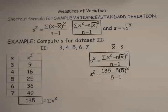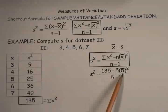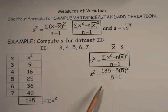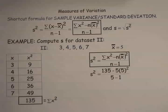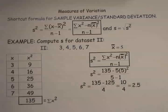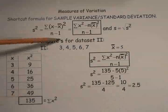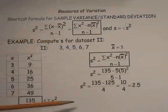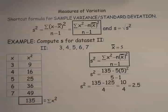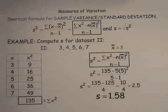Plugging that in and noting that N is five and X-bar is five — that's just a coincidence — we end up with 10 fourths, which is 2.5. Remember, we're looking for S, not S², so the last step is to take the square root of S² to get S. The square root of 2.5 is about 1.58. Using our shortcut formula, the sample standard deviation for data set two is about 1.58.